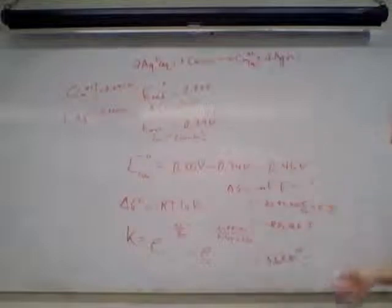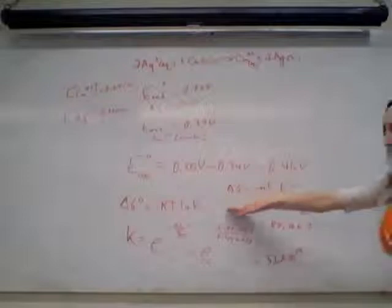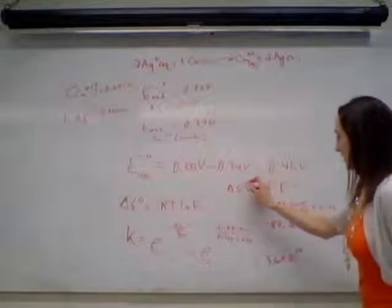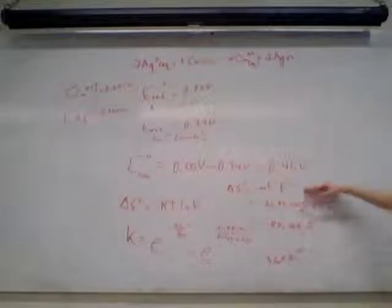So that's how you manipulate the cell potential, plugging into the delta G equation, just like we did in the last unit. Once we get delta G, and this is delta G naught, sorry, from the standard cell potential, there we go.